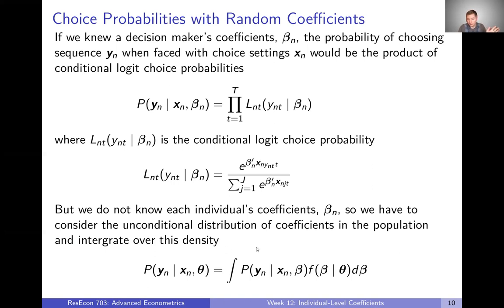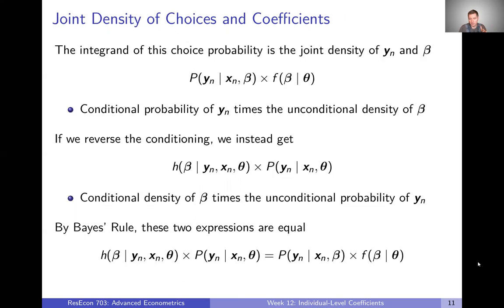We get to exactly the same place we got to with the mixed logit model: the choice probability for a sequence of choices is the integral of the conditional choice probability, conditional on beta, times the density of beta — integrated over the density of beta. Now let's think about what this integrand actually is: the probability of y conditional on beta times the density of beta. You can think of this as telling us the joint density of that sequence of choices y and beta — a conditional probability of y sub N times an unconditional density of beta, giving us the joint density of our choices and the betas.